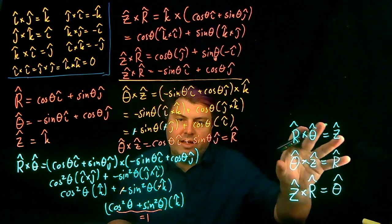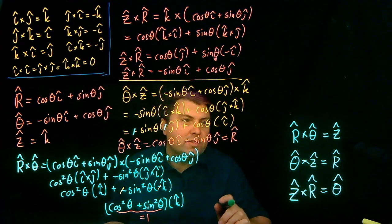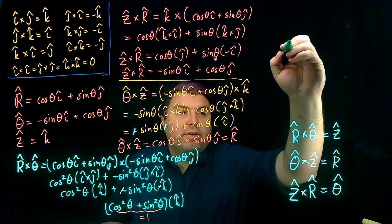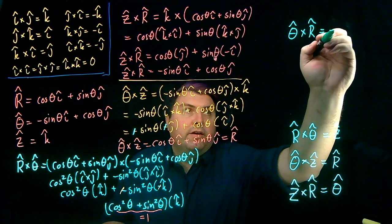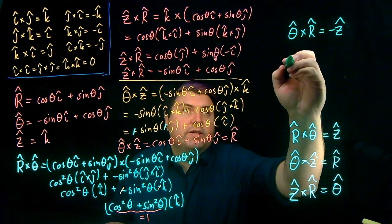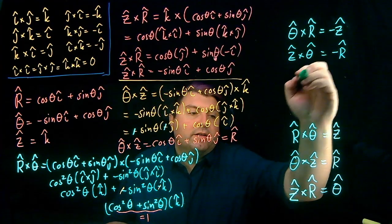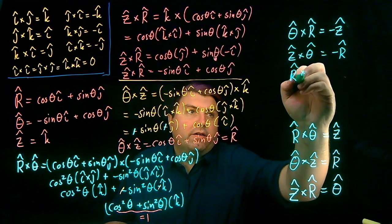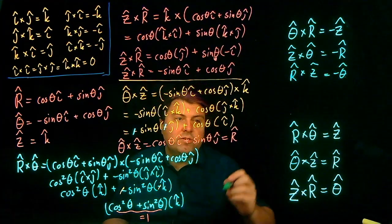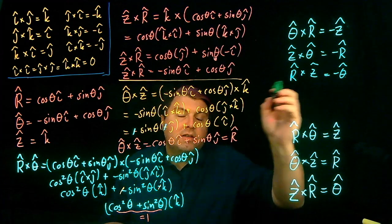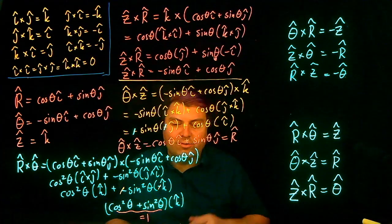We can also write the inverses, since cross products don't commute: θ̂ × R̂ = −Ẑ, Ẑ × θ̂ = −R̂, and R̂ × Ẑ = −θ̂. So we can use these identities for cylindrical coordinates just as we did for Cartesian coordinates.